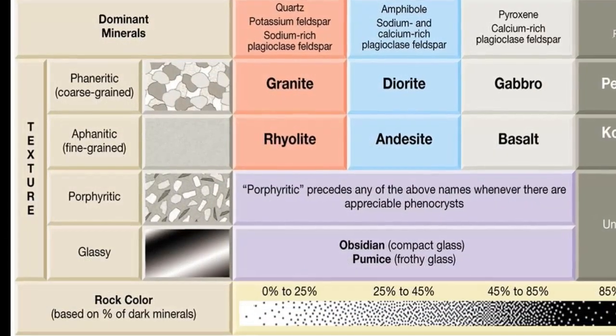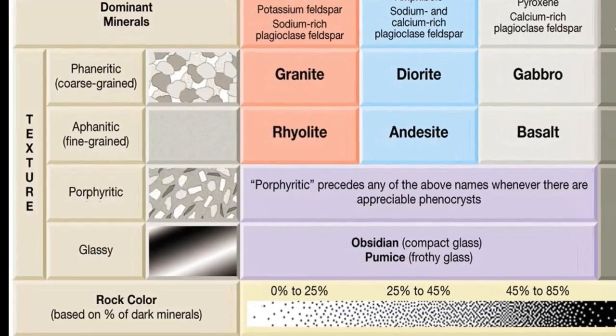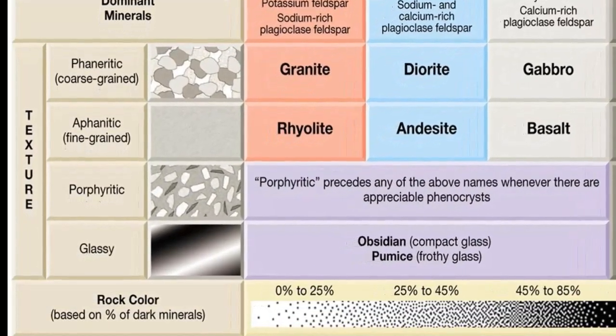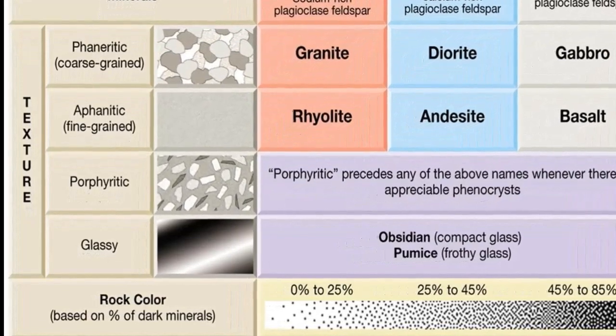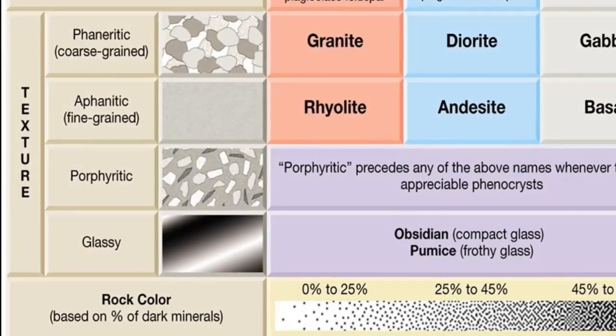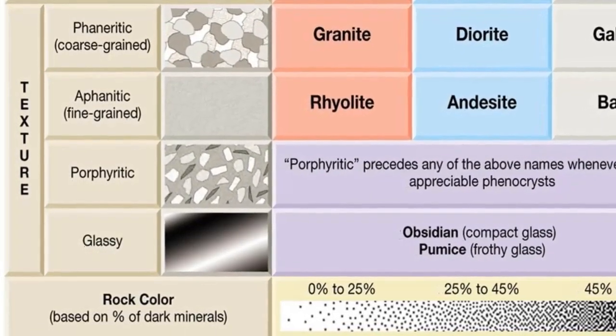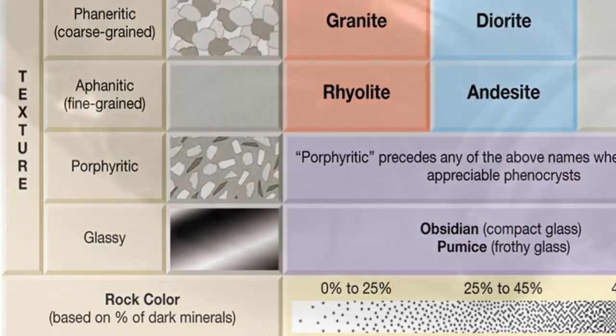As a general rule, magmas with a high silica content tend to form chain-like structures before crystallization is complete. These structures in turn impede ionic transport and increase the magma's viscosity. Viscosity is a measure of a fluid's resistance to flow.